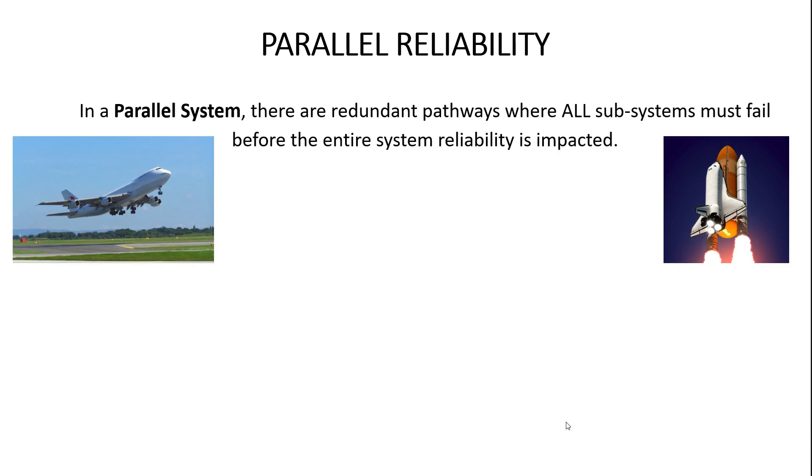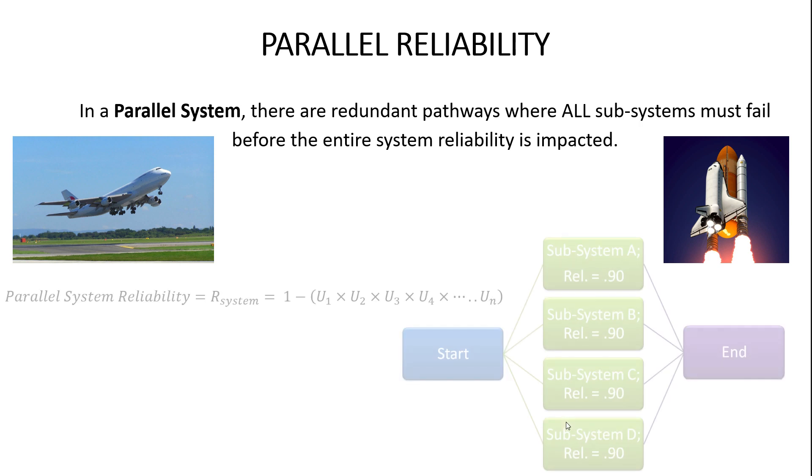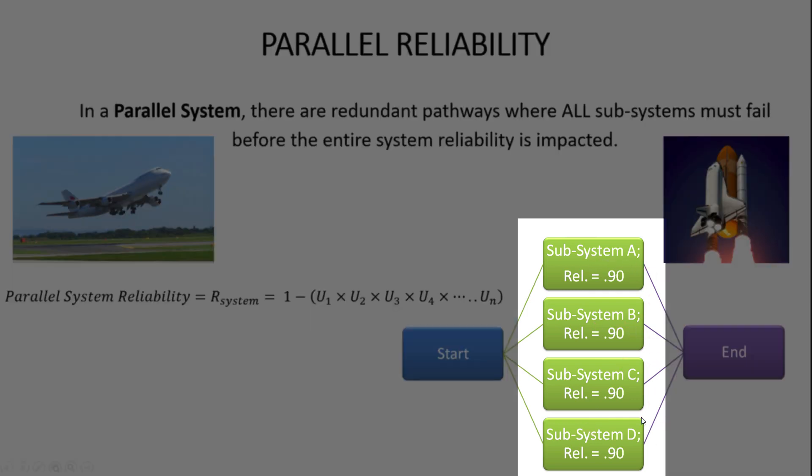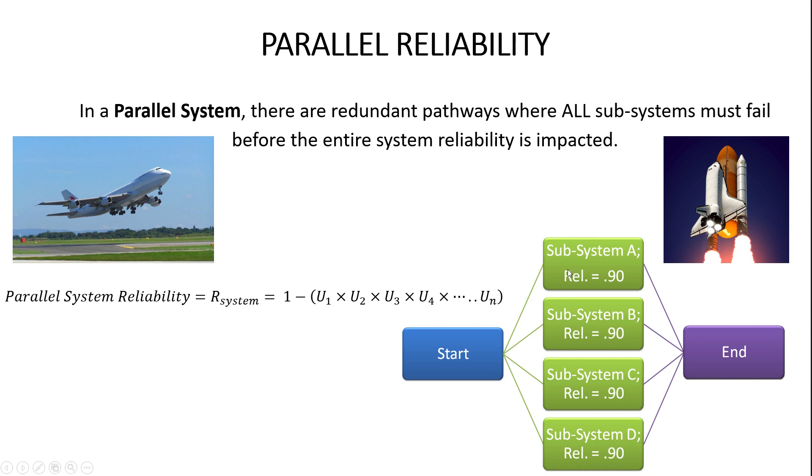So now let's move on to parallel reliability. So in a parallel system, when we really need reliability to be super high, we often design our products with redundant pathways, where all of the subsystems must fail before the entire system reliability is impacted. So I want to help you graphically kind of visualize this to understand this idea of a parallel system. So the way this is constructed is let's say we have four subsystems, A, B, C, and D, and they're identical subsystems, and they all must fail before the entire system reliability is impacted. So these are basically redundant standby systems.